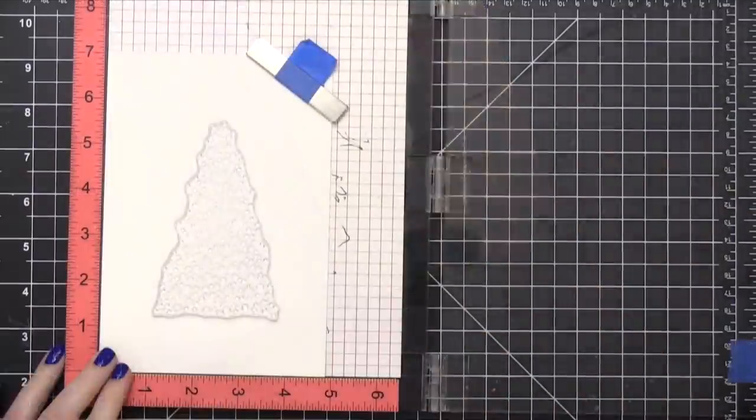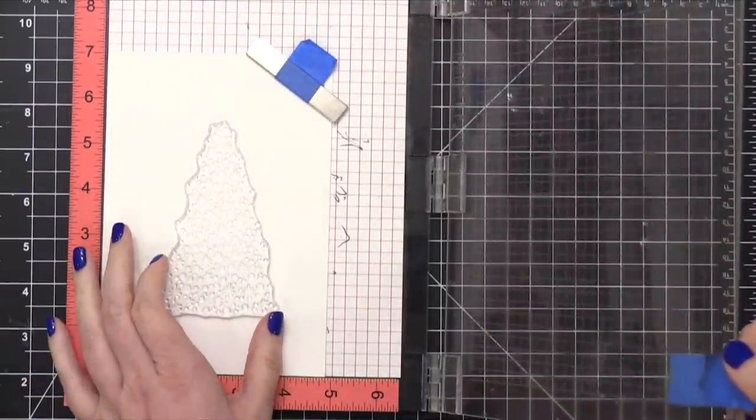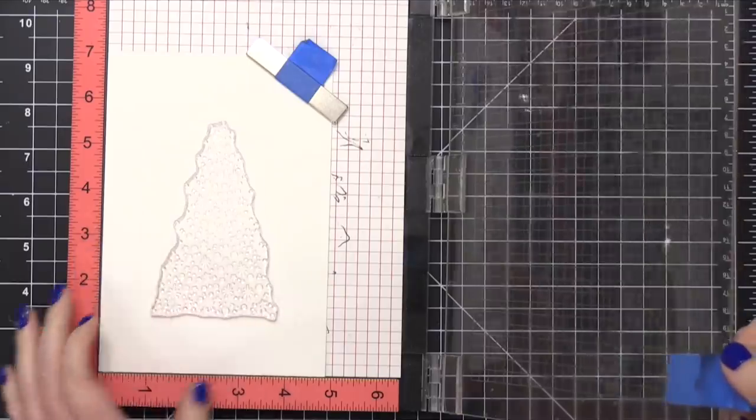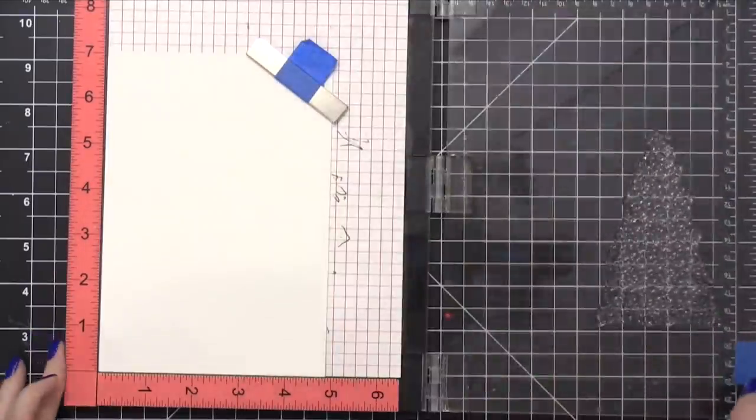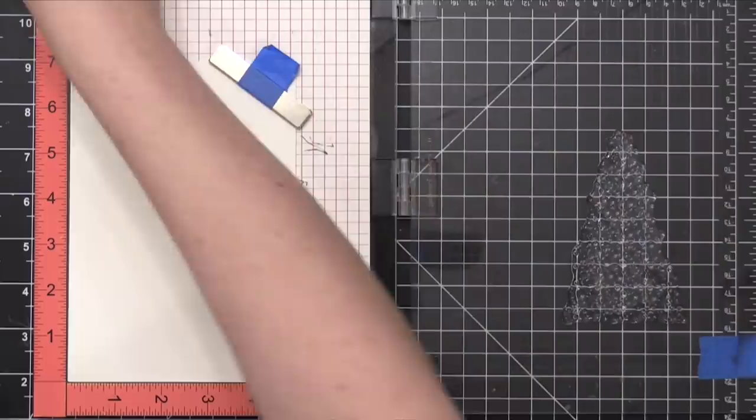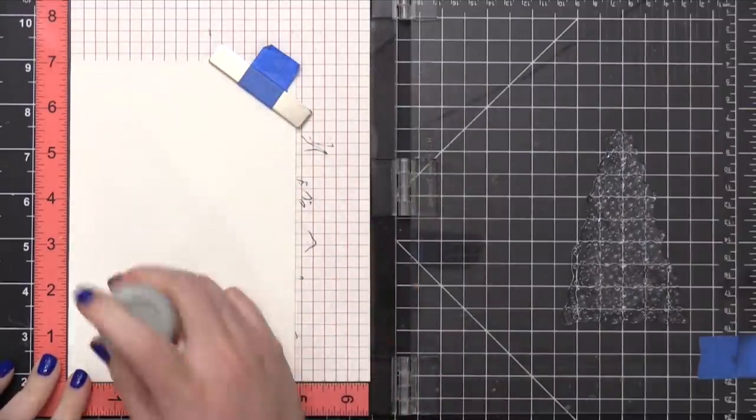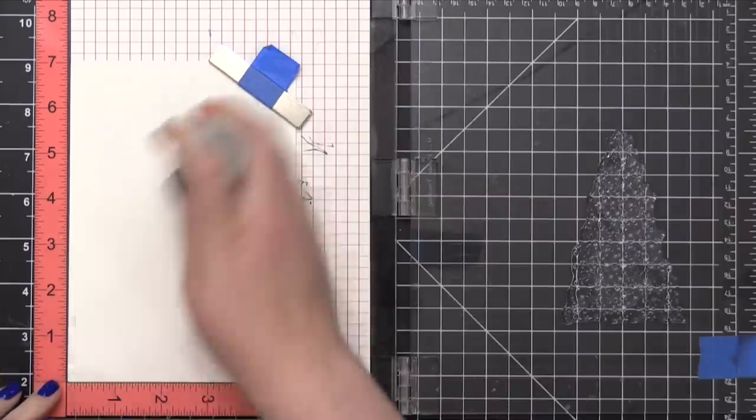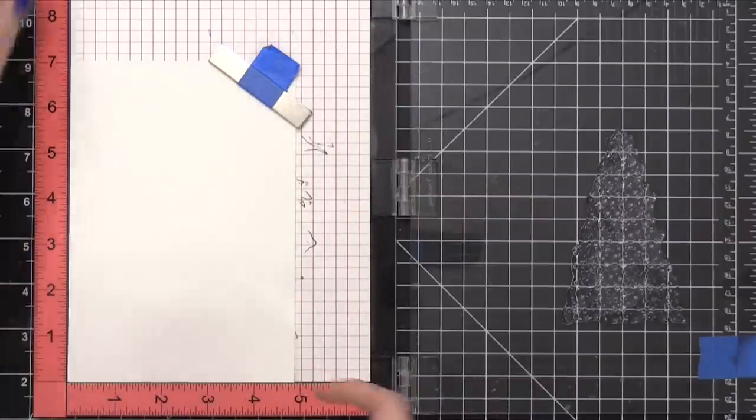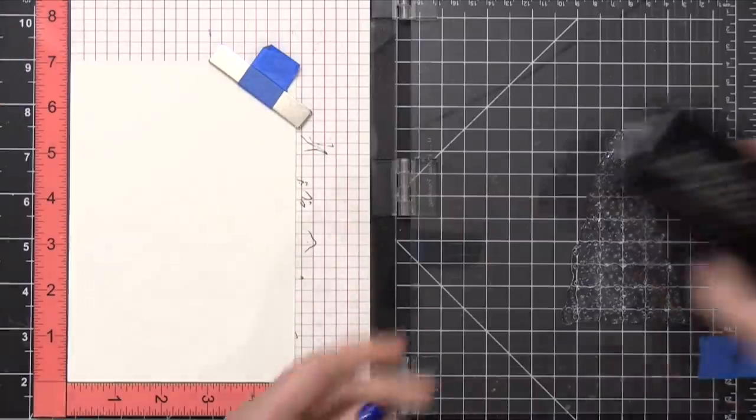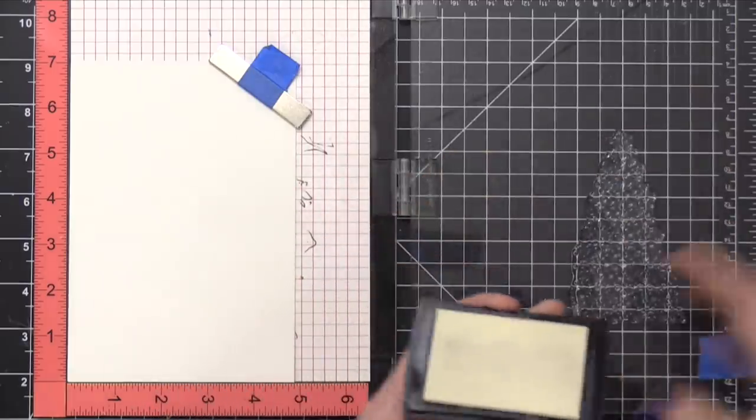This is some Fabriano Artistico extra white watercolor paper and I place it inside a MISTI stamp positioning tool. Then I'm going to prep the watercolor paper with an anti-static powder tool. I'm going to be doing some heat embossing and I want to make sure that this area is completely ready so that I don't have any embossing powder sticking to areas where I don't want it.